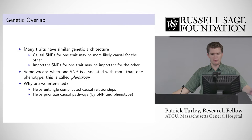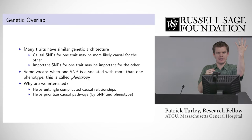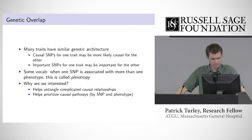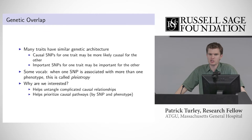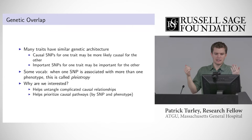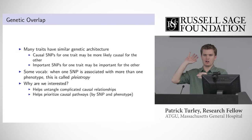We want to get an estimate of how strong that relationship is — if we find a SNP for one trait, how likely is it to also be causal for another? Because there's pleiotropy, there's going to be genetic overlap. Why might we care about overlap? It might help us untangle complicated causal relationships and prioritize causal pathways.